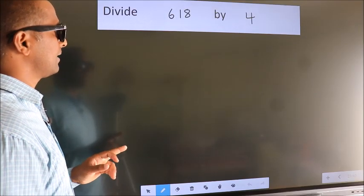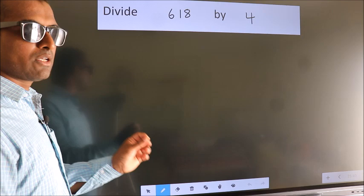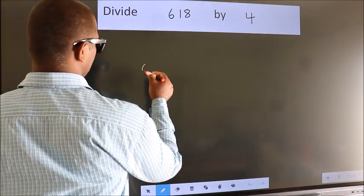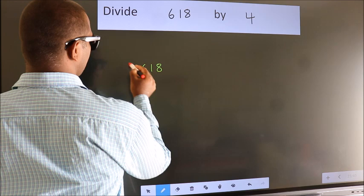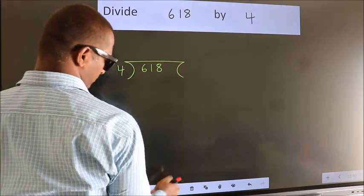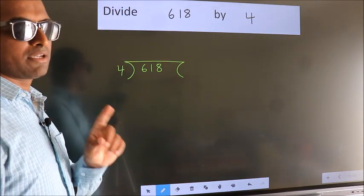Divide 618 by 4. To do this division, we should frame it in this way. 618 here, 4 here. This is your step 1.